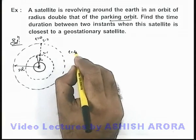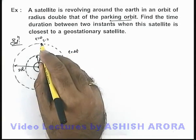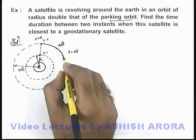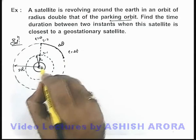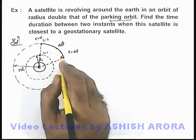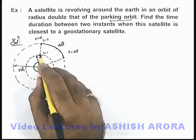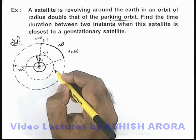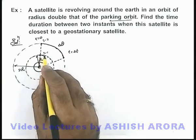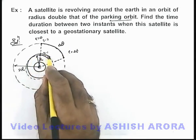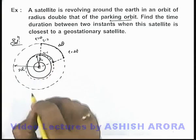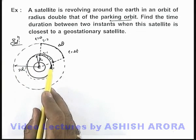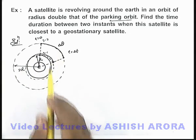In a time delta t, if satellite 2 revolves by an angle delta theta and reaches a new position, then for both satellites to again be at the closest separation, satellite 1 must have revolved by an angle 2π plus delta theta — traversing a full extra revolution and arriving at the same angular position as satellite 2.